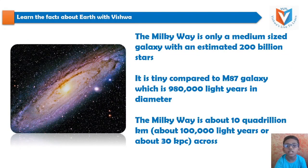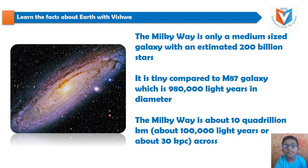The Milky Way is only a medium-sized galaxy with an estimated 200 billion stars. It is tiny compared to the M87 galaxy, which is 980,000 light years in diameter. The Milky Way is about 10 quadrillion km across.